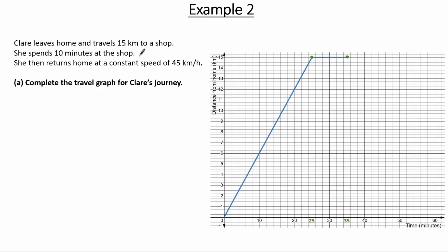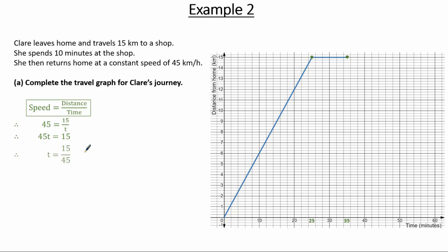To complete the travel graph we need to draw Claire's return journey at a constant speed of 45 kilometers per hour, over a distance of 15 kilometers. Using speed equals distance over time: 45 equals 15 divided by t, so 45t equals 15, giving t equals 15 over 45, which equals one third of an hour. Converting to minutes: one third multiplied by 60 equals 20 minutes. So it takes Claire 20 minutes to get back home.